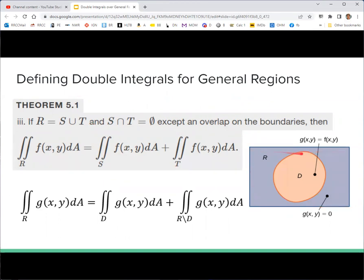This rectangle R can be broken up into D, which is sort of like S in this theorem, and then this outer part, which is the complement of D with respect to R. In set theory, you can write this as R slash D, it's kind of like R minus D. So that's outside of D but inside of R. Those two pieces together have a union of R, and so we can break the integral of R up into those. We're doing this with the function G, by the way.